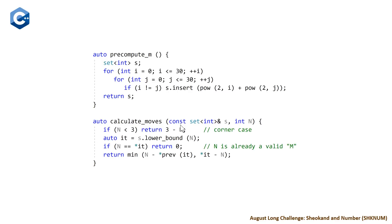For our second function calculate moves, we're passing in by const ref our set of integers and our value m. First we look for our corner case: if our value n is either one or two, calling lower bound binary search will lead to a problem. If it's one or two, we return three minus that value because the lowest m value is 2 to the power of 0 plus 2 to the power of 1, which is 1 plus 2 equals 3.